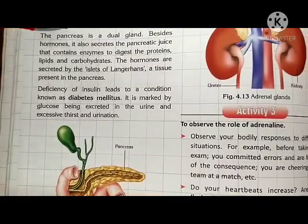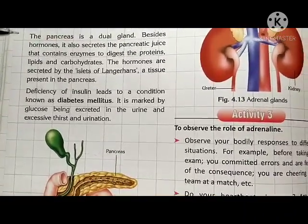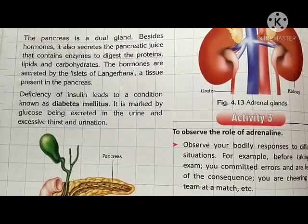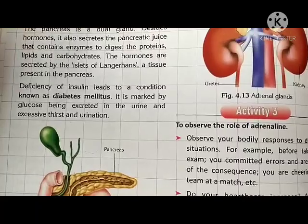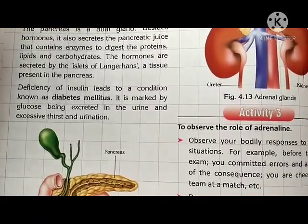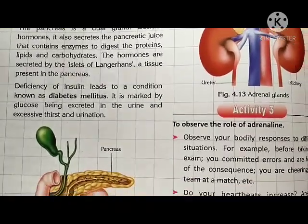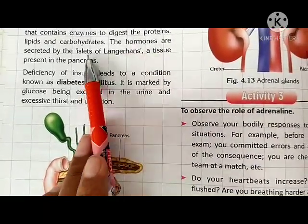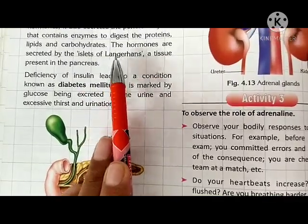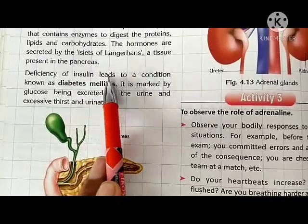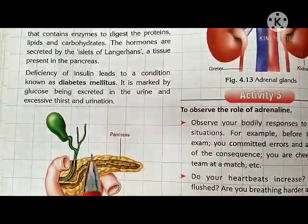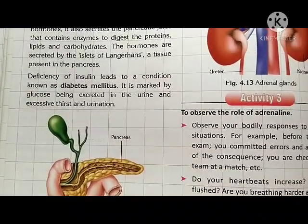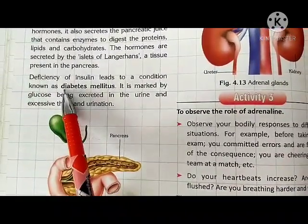The pancreas is a dual gland, meaning it secretes hormones into the blood and also has a duct, so it acts as both an exocrine and endocrine gland. The hormones are secreted by the islets of Langerhans, a tissue present in the pancreas. Deficiency of insulin leads to a condition known as diabetes mellitus. If the pancreas is not secreting insulin, or secreting it in very low quantities, the person will suffer from diabetes mellitus.